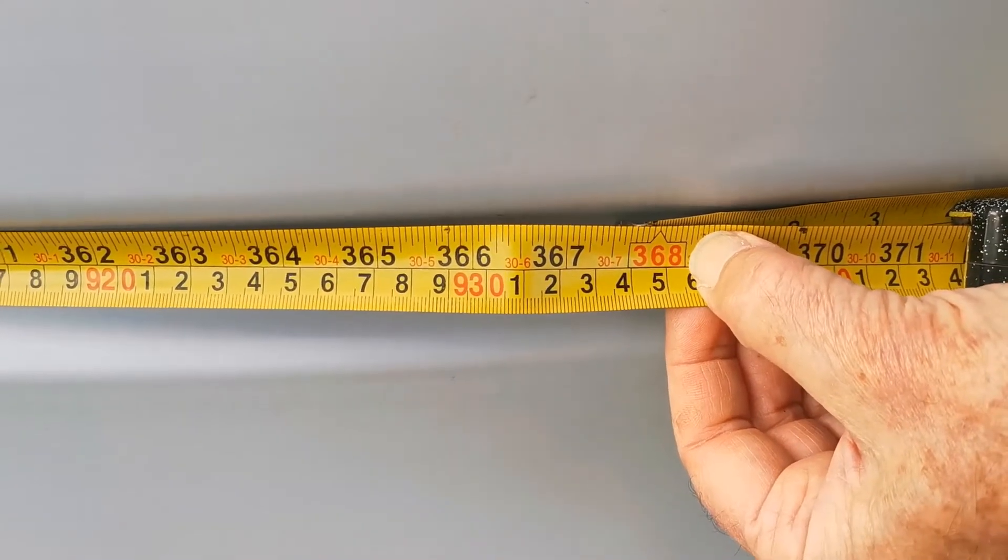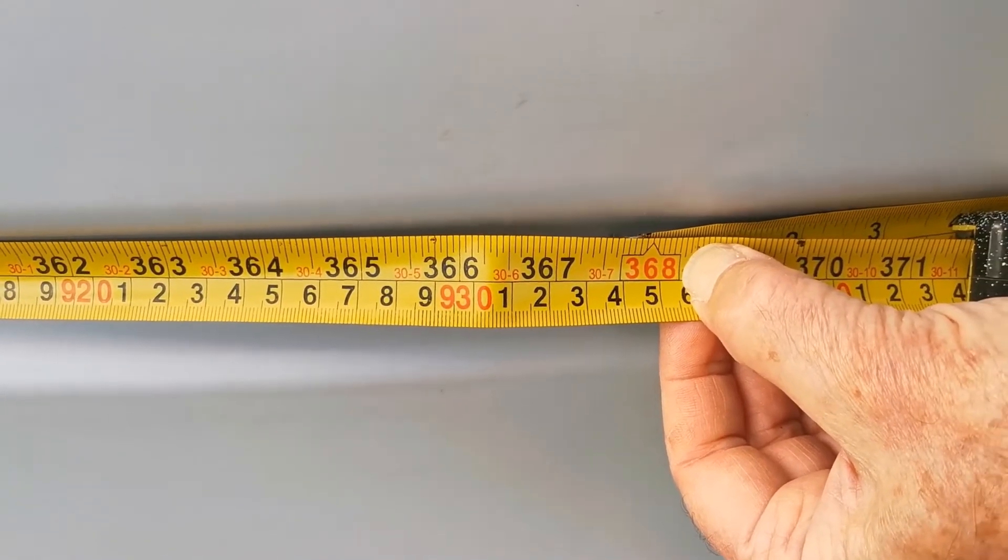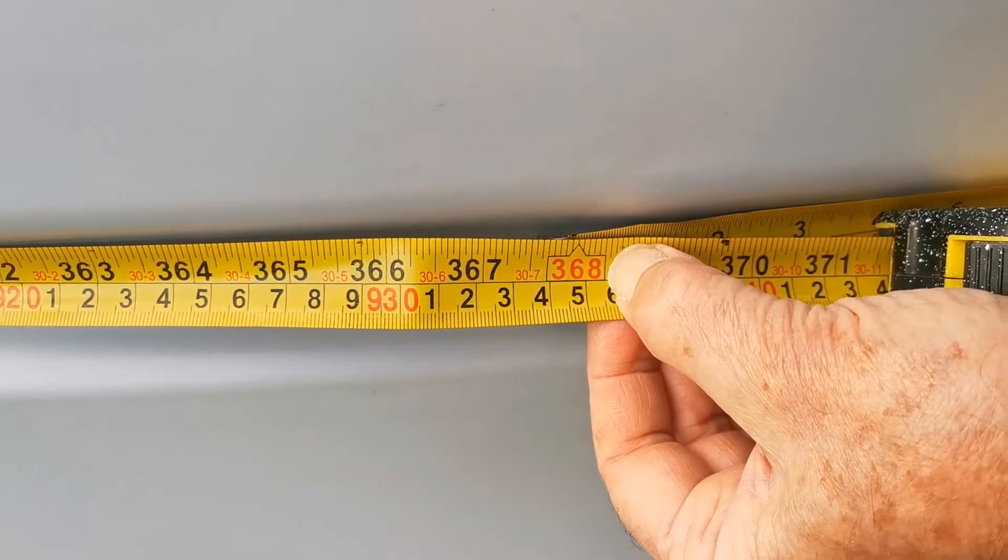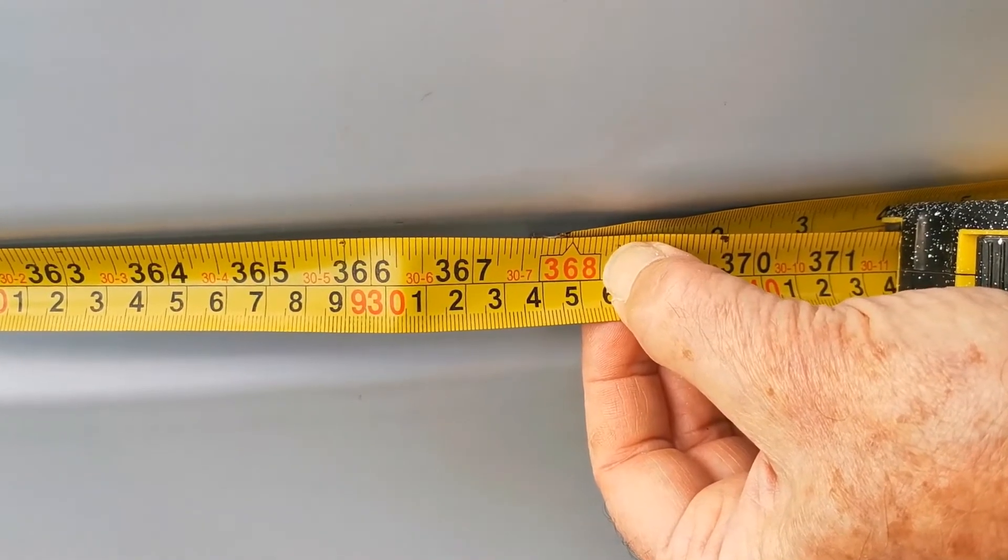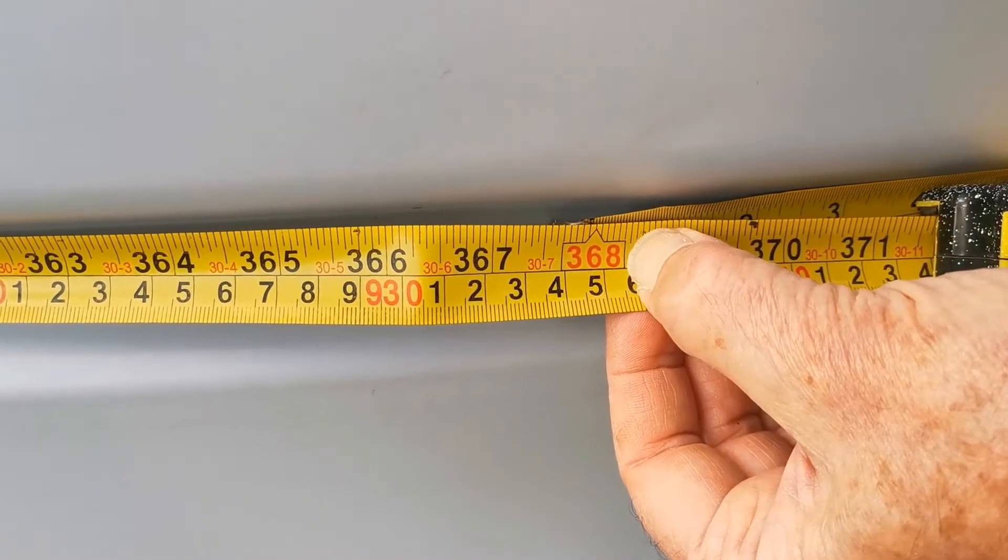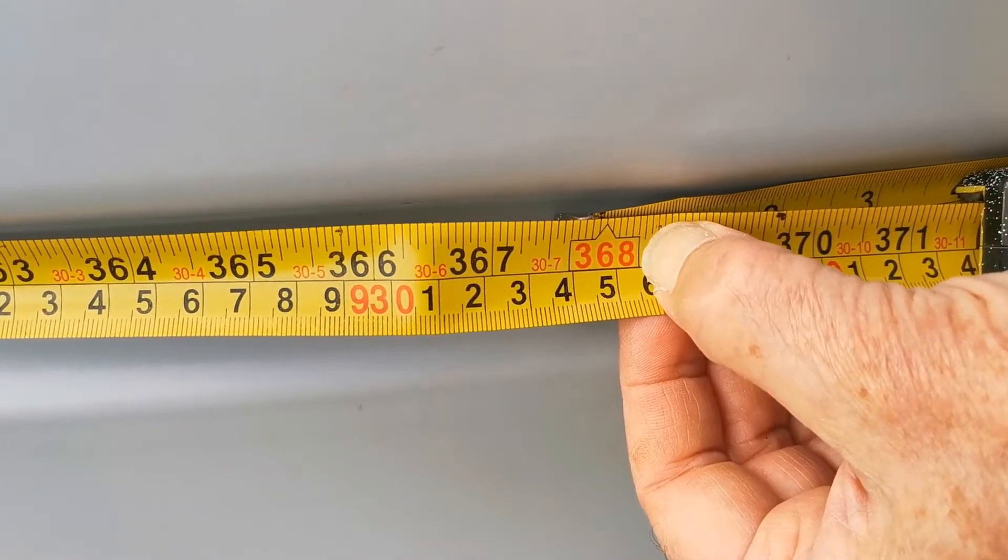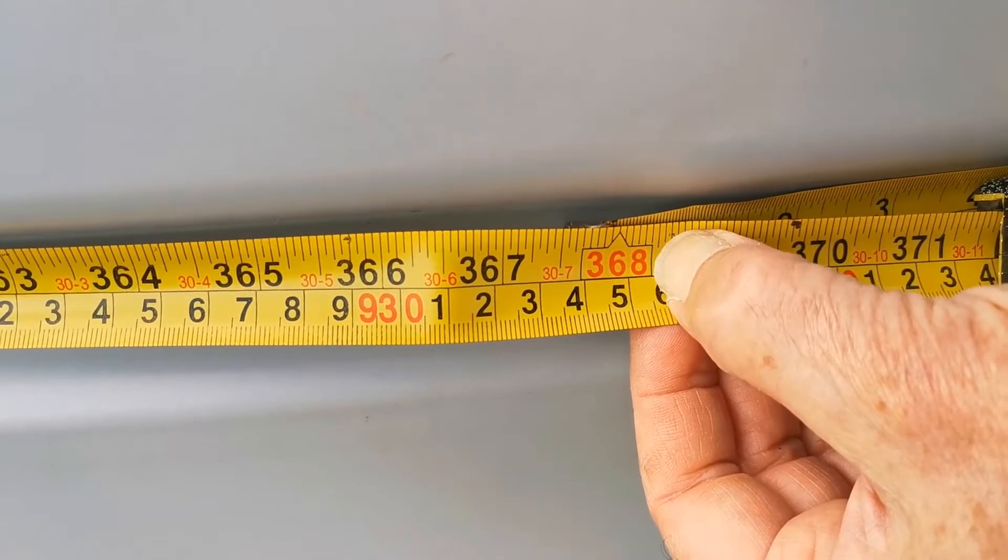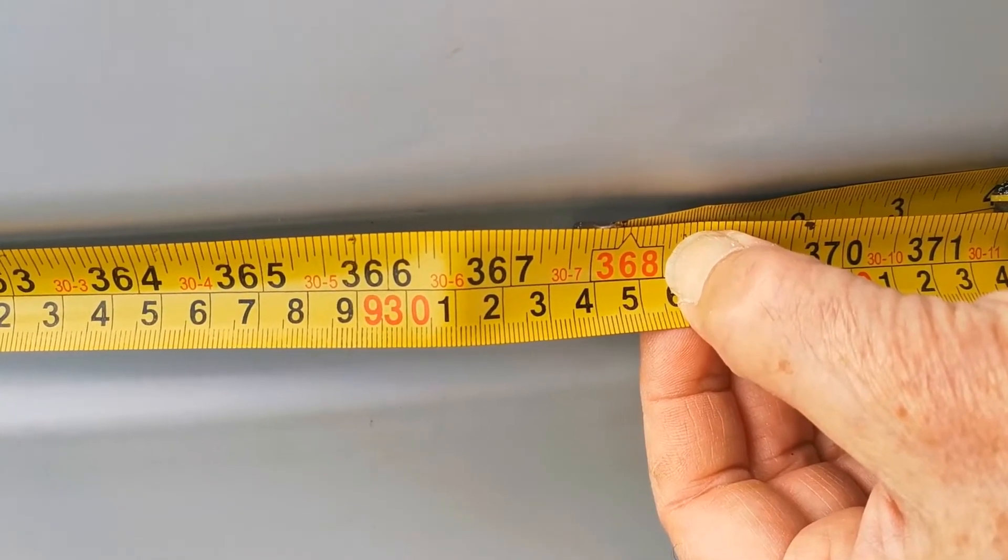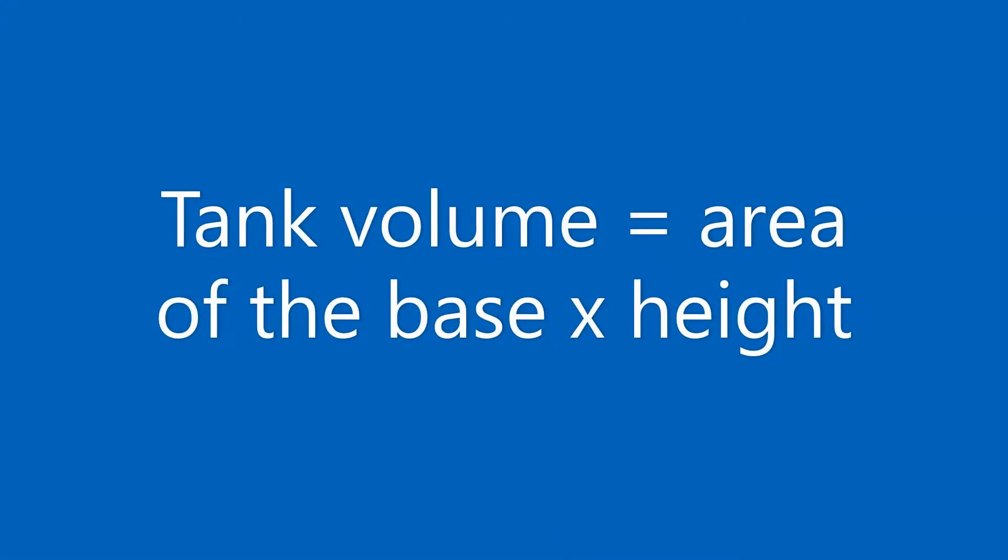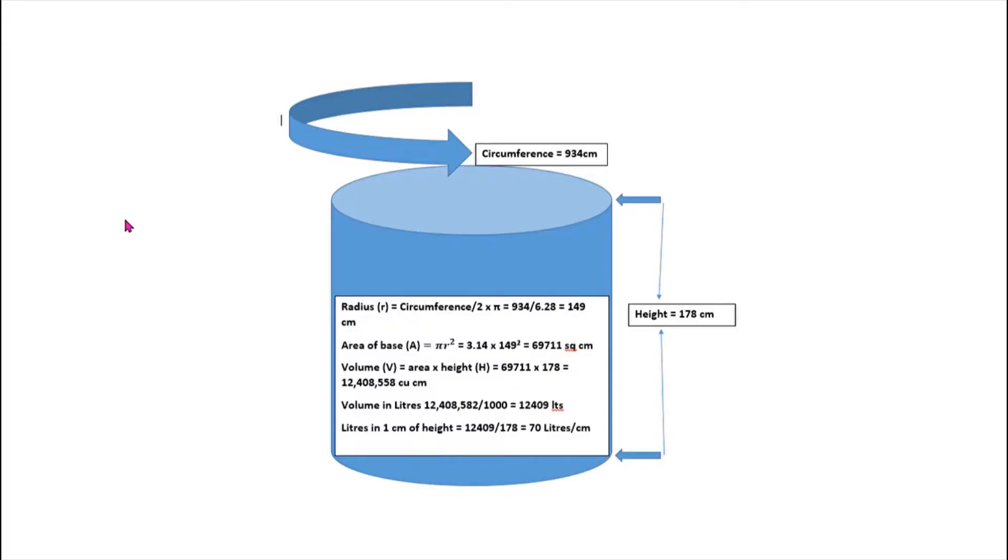Now to calculate the volume, we need to have the radius of the tank, but it's not practical to measure the radius directly. So I'm measuring the circumference here, and then we'll calculate the radius from that. The circumference is 934 centimeters.